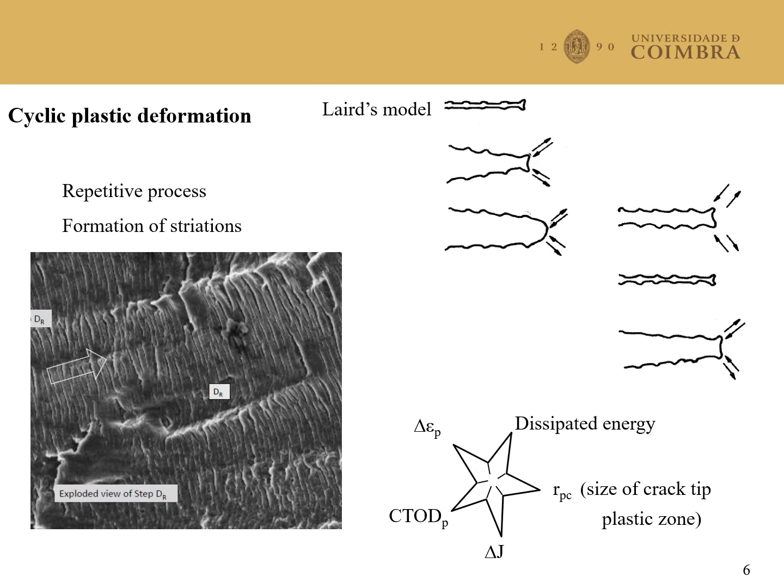The main mechanism behind fatigue crack growth is cyclic plastic deformation, and the Laird model explains the formation of striations on a fracture surface. This picture shows some striations on a fracture surface.